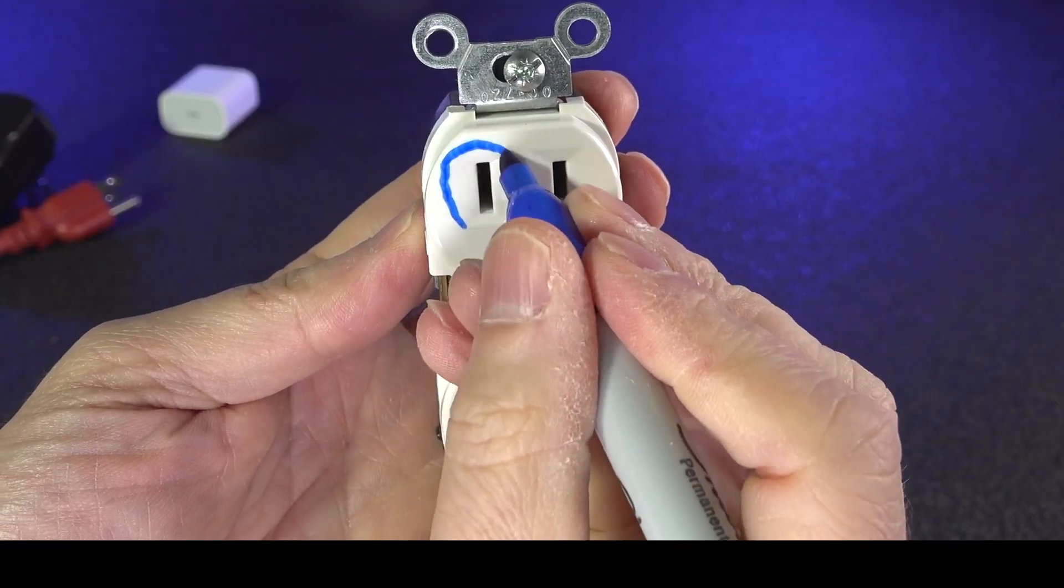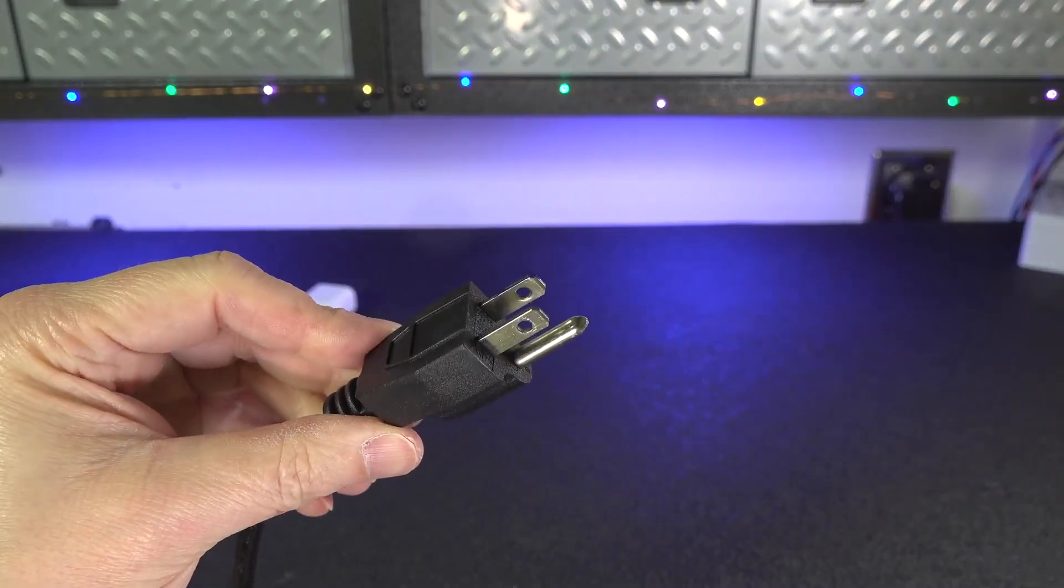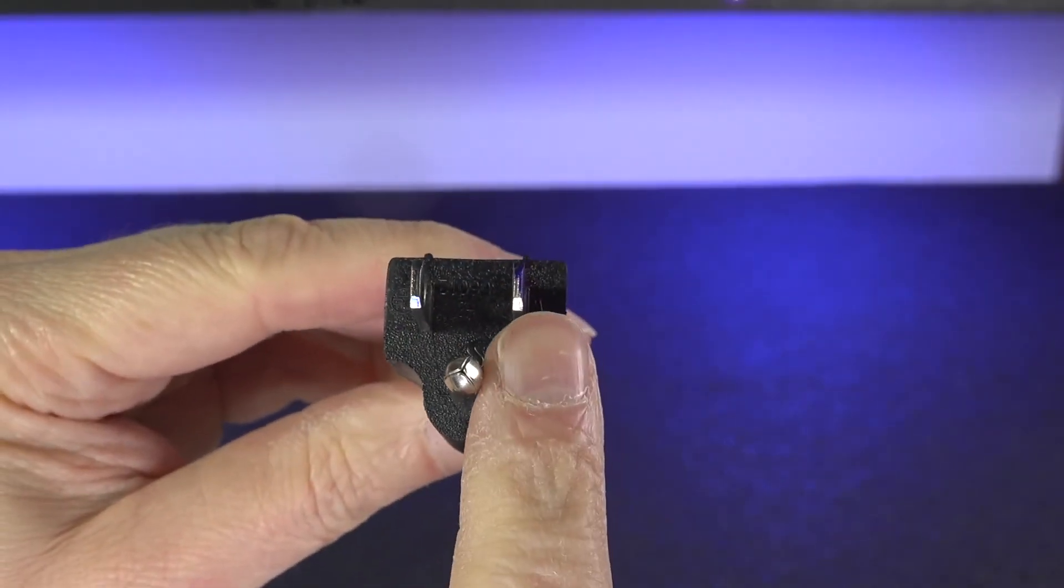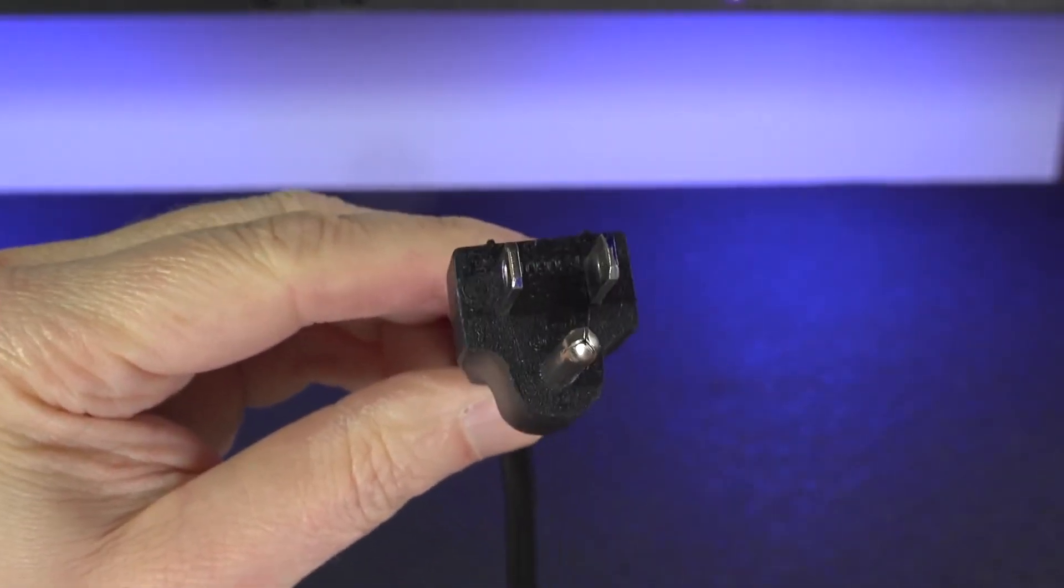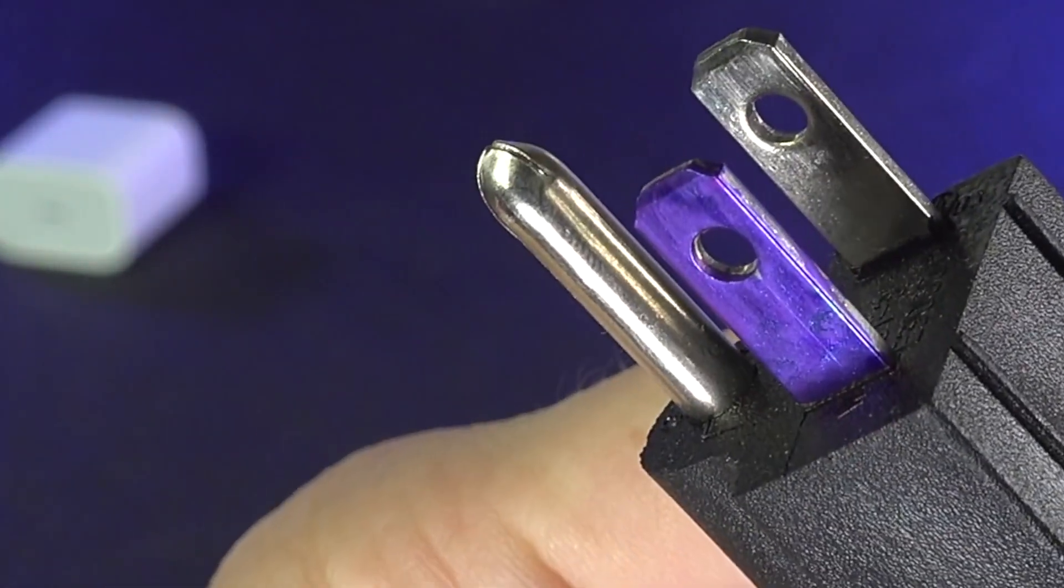But then why do some cords still not use this setup? And are they unsafe to use? Well, let's start by looking at this typical three-prong cable. Now as we look, both of these prongs on top are exactly the same size and it's not polarized. This plug has a little bit of a secret and that's this ground prong on the bottom.